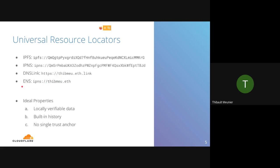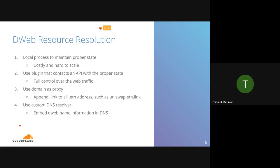You can also use ENS to have a decentralized version where the record is stored in ENS and you're still accessing the same website. Ideally, we want local verifiable data — ENS and IPFS are great for that because you can verify both the name and the content you receive. You have built-in history thanks to ENS smart contracts, and no single trust anchor.